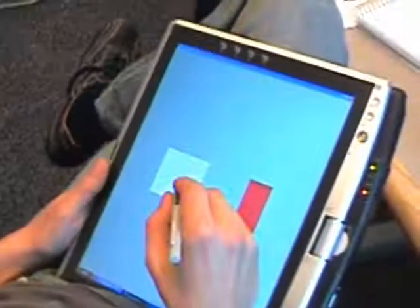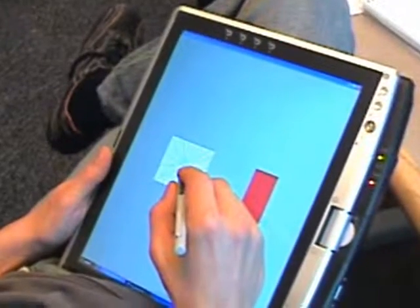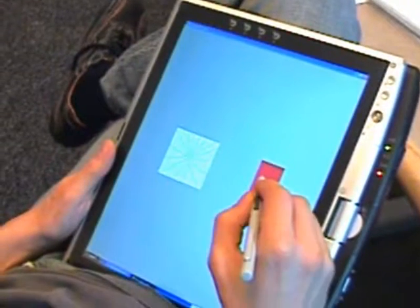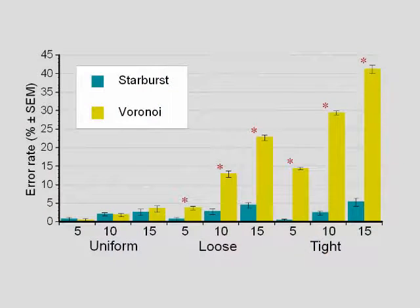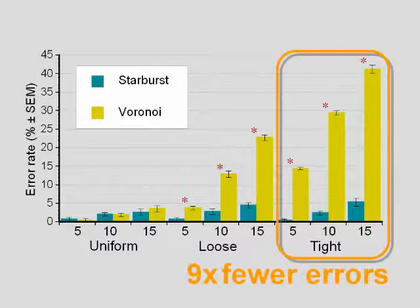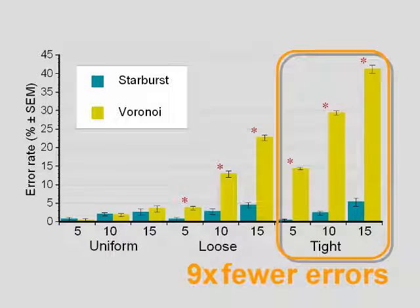We conducted two user studies in which participants acquired targets with a pen. Participants performed significantly fewer errors if targets were expanded using Starburst than when they were expanded using a traditional Voronoi-based algorithm.